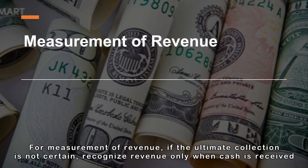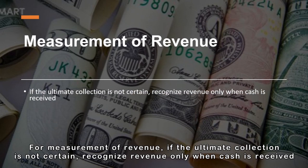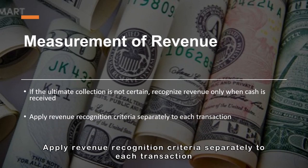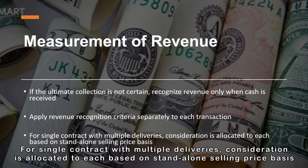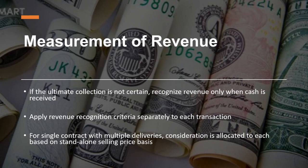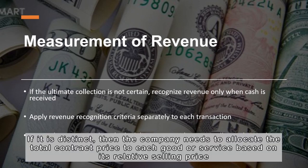For measurement of revenue, if ultimate collection is not certain, recognize revenue only when cash is received. Apply revenue recognition criteria separately to each transaction — when there are multiple transactions with different situations, apply the three criteria to each one. For a single contract with multiple deliveries, consideration is allocated to each based on stand-alone selling price. If the deliverables are distinct, the company needs to allocate the total contract price to each good or service based on its relative selling price.